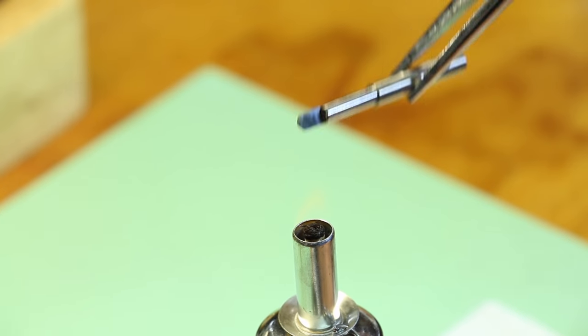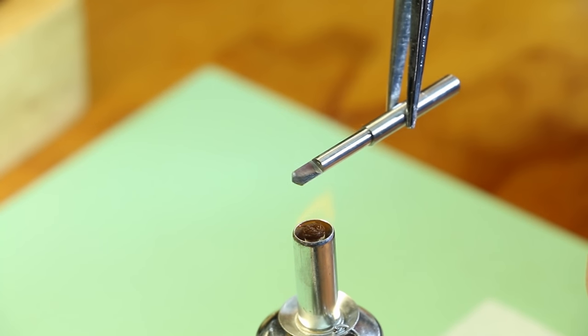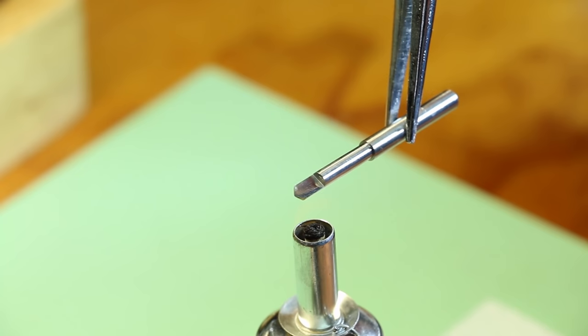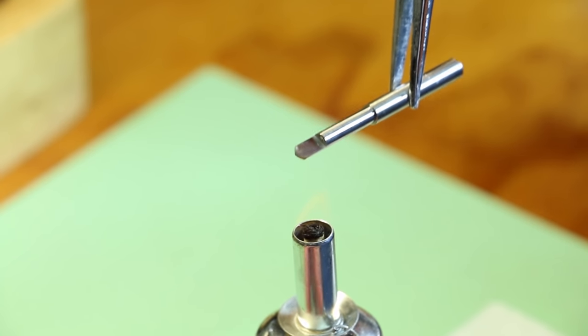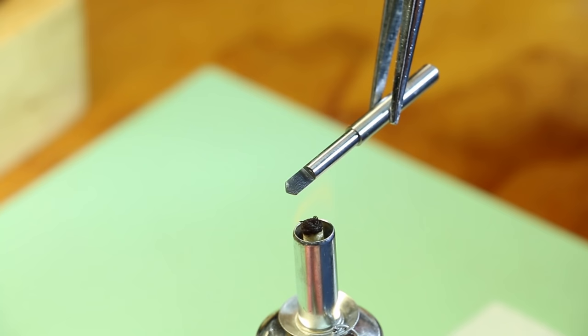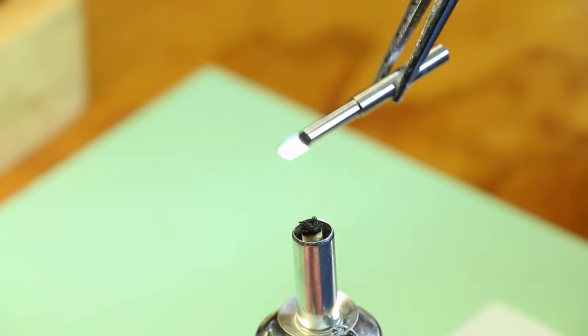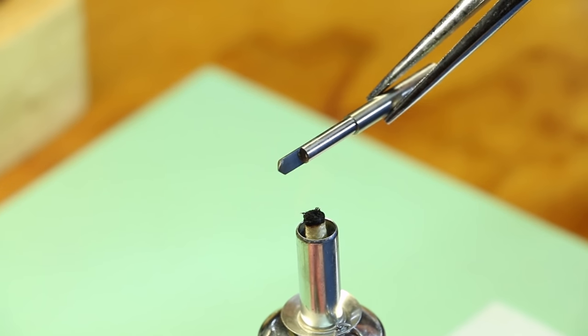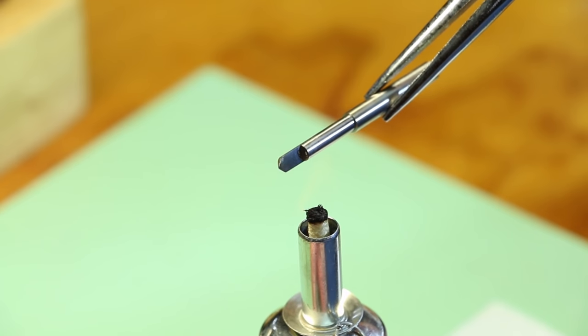After the scale is removed, it is time to temper the cutting tip. We do this by getting the steel to a light straw color, which is approximately 250 degrees Celsius or 482 degrees Fahrenheit, using a soft flame which the alcohol lamp is perfect for.